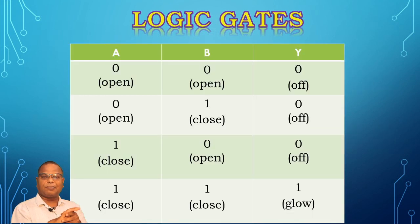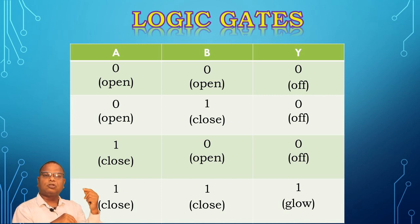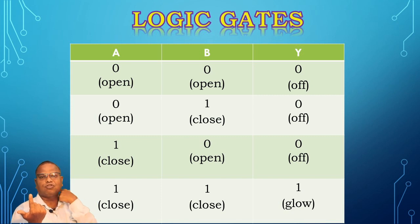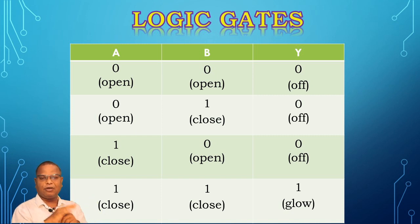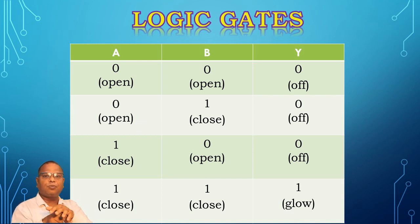We have a truth table with inputs A, B and output Y. A and B are the input logics and Y is the output logic. When both are 0-0, switch is open, lamp does not glow, output remains 0. When input is 0-1, S2 switch is on but circuit is incomplete, output still remains low. When input is 1-0, S1 is on but circuit is not complete, output still remains low. When both inputs are 1-1, the circuit is complete, current flows, lamp glows, and output is 1. So only when all inputs are high does the output become high — that is the AND gate.